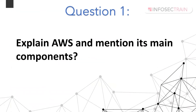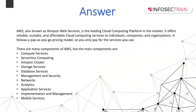Explain AWS and mention its components. AWS is also known as Amazon Web Services. It is the leading cloud computing platform in the market. It offers reliable, scalable, and affordable cloud computing services to individuals, companies, and organizations. It follows a pay-as-you-go pricing model, so you only pay for the services which you are using. There are many components of AWS.